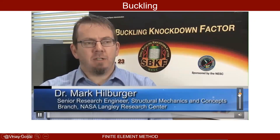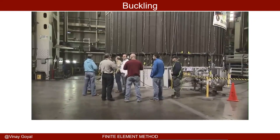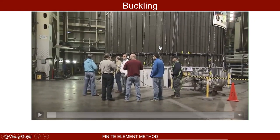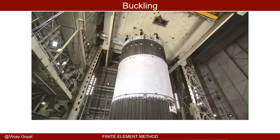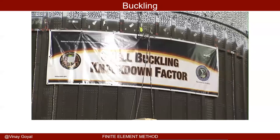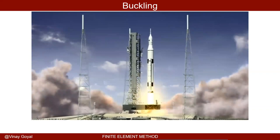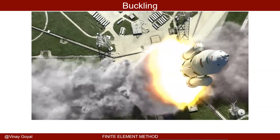The test article is a 27 and a half foot diameter, 20 foot tall, aluminum lithium orthogrid cylinder — very similar to the types of cylinders flying on the space shuttle external tank. This test article is derived from some excess hardware from the space shuttle program, configured very much like the future SLS core stage tank structures. So it's very relevant to what NASA is designing today.